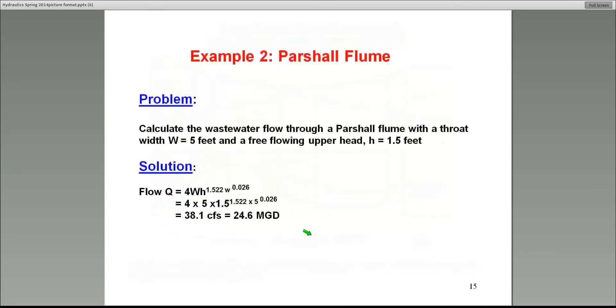But make sure the units are consistent. And here's the equation, and I've set up a small example for you. As I said before, in this case, you have a Parshall flume with a throat width of 5 feet. That's one of the variables. And it has a free-flowing upper head of 1.5 feet. And that's all you need in order to calculate the Q here. So notice here what I've done, W to the power 0.026. So I take 5 to the power of 0.026 first. And then whatever I get, I multiply by 1.522. And then raise that new exponent to the power of 1.5. And finally, I calculate the Q. It comes out in CFS, the answer. That's a consistent unit.